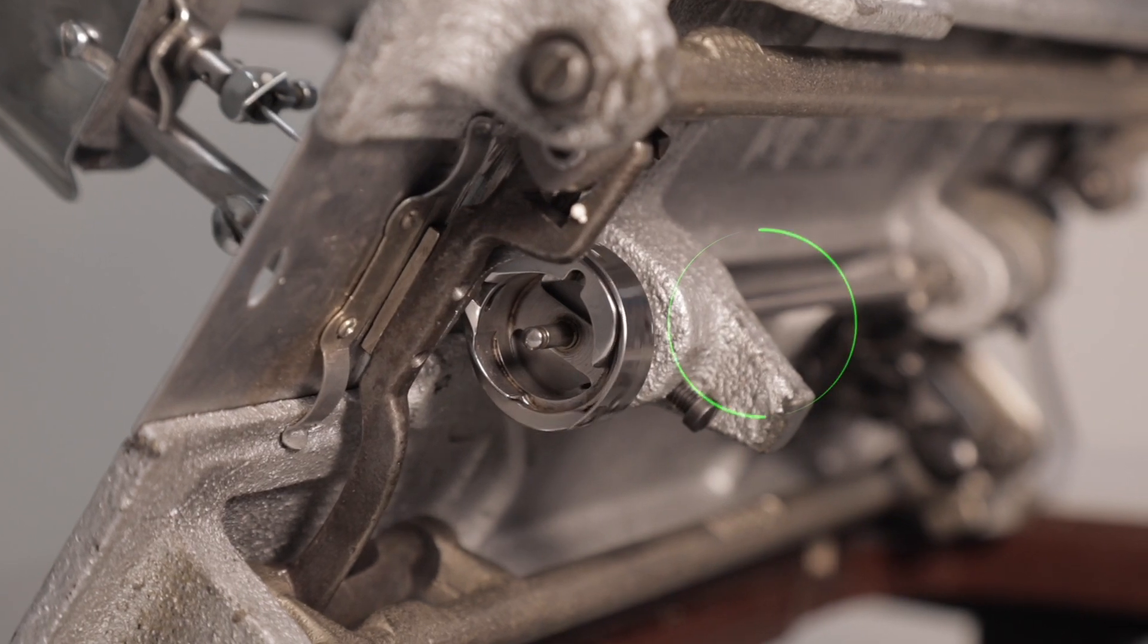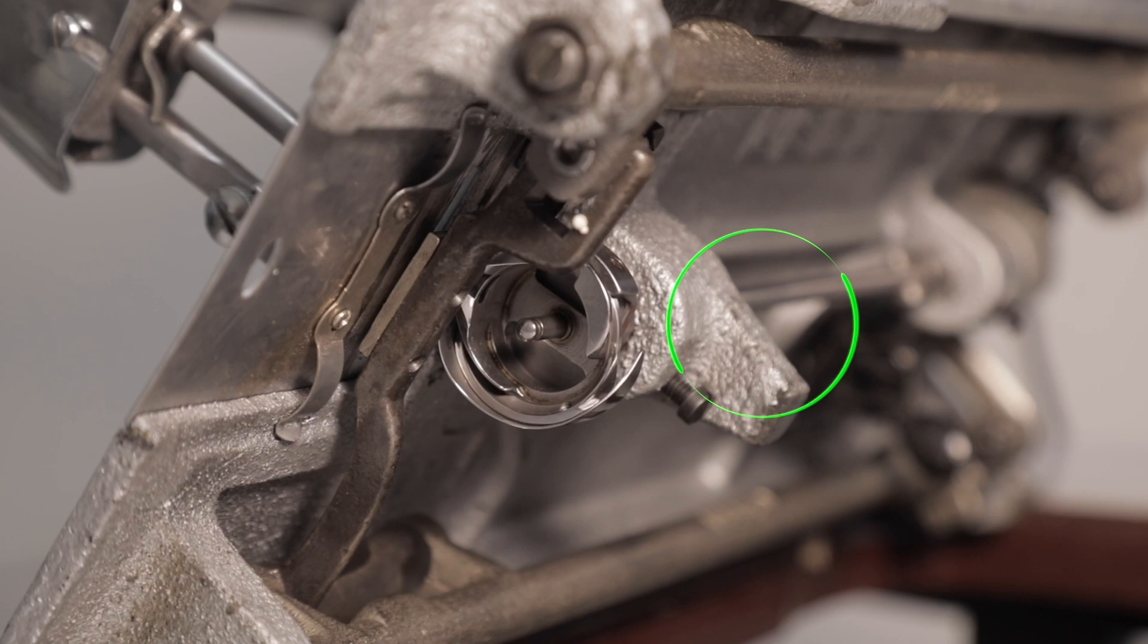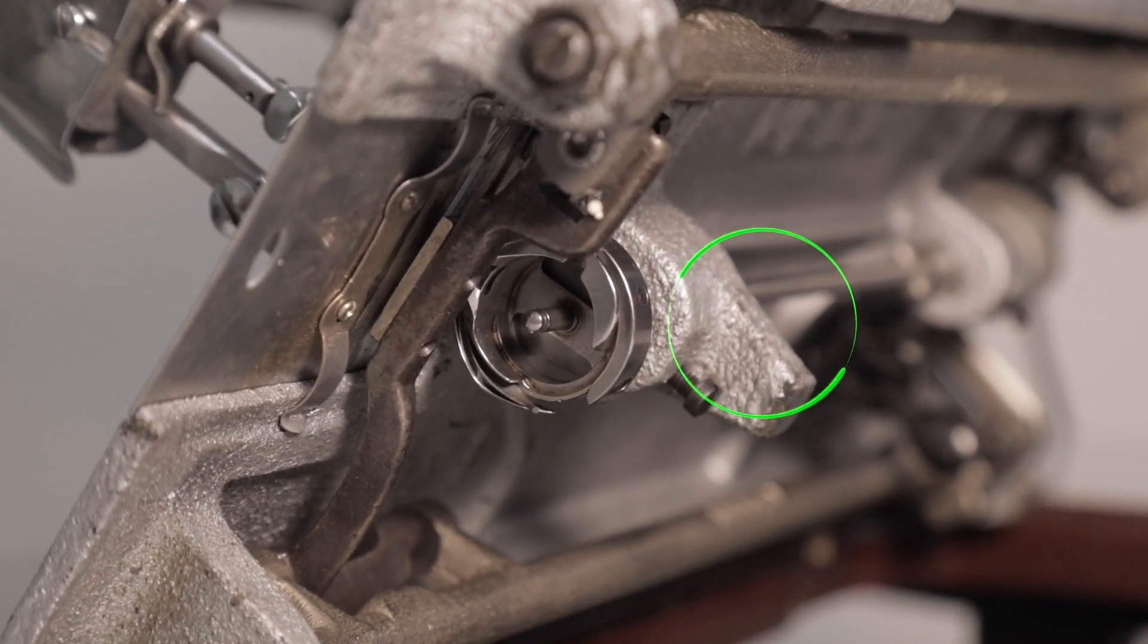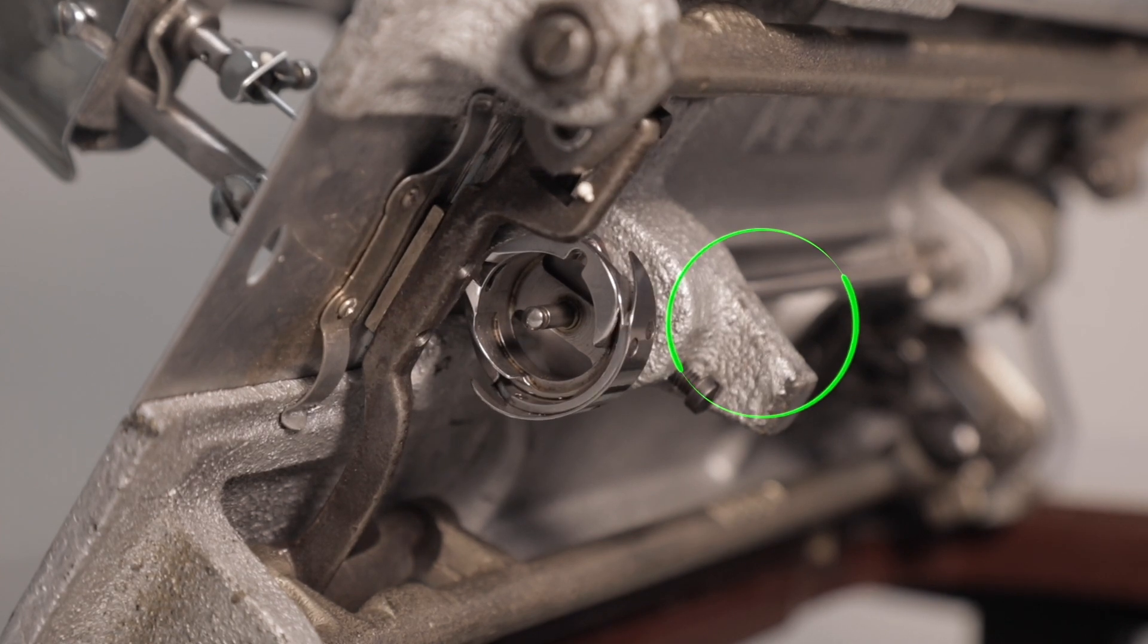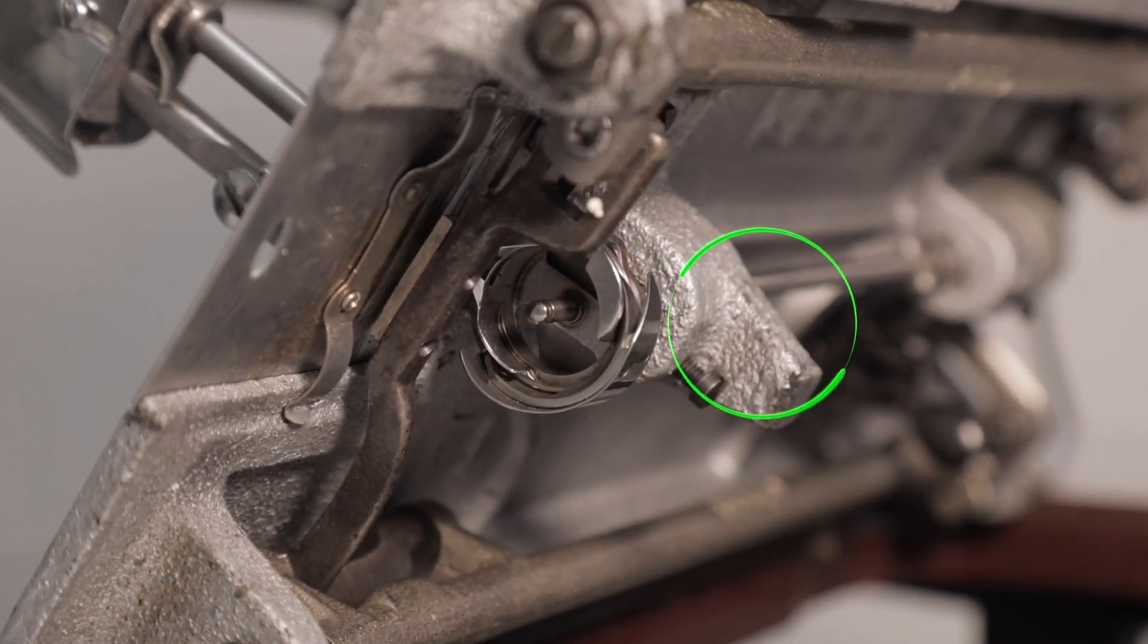Lastly, let's look at the full rotary shuttle. This component provides smooth and efficient bobbin operation, allowing for quieter and more precise stitching. The full rotary shuttle unit helps reduce thread jams and ensures consistent stitching quality.